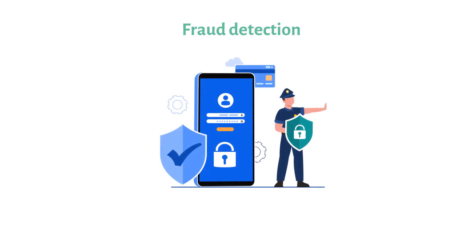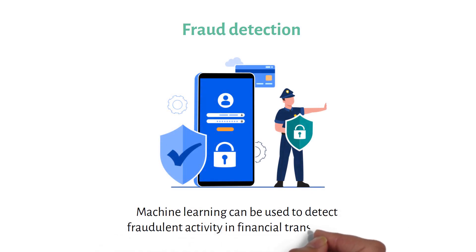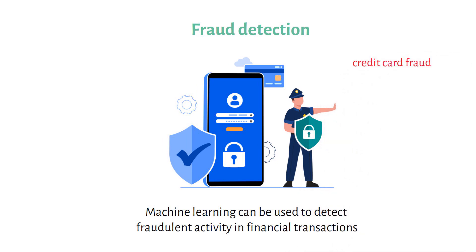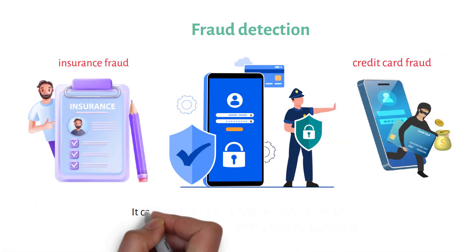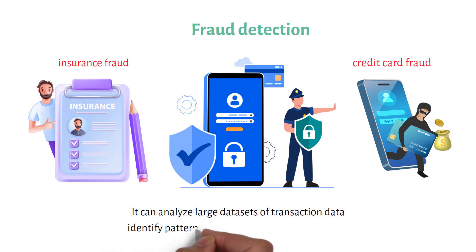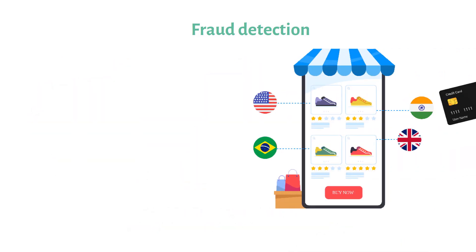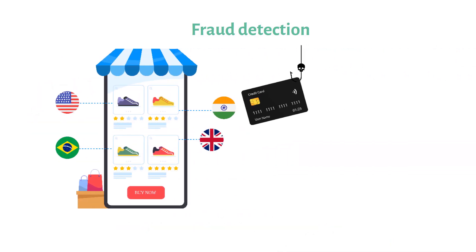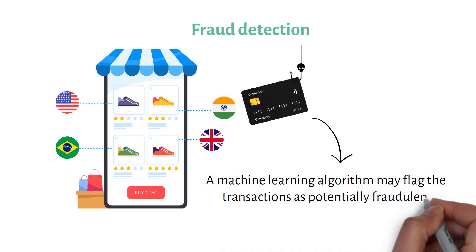Fraud detection: machine learning can be used to detect fraudulent activity in financial transactions, such as credit card fraud or insurance fraud. Machine learning algorithms can analyze large datasets of transaction data and identify patterns that indicate fraudulent activity. For example, if a credit card is used to make multiple purchases in different locations within a short period of time, a machine learning algorithm may flag the transactions as potentially fraudulent.